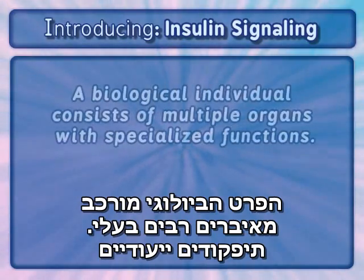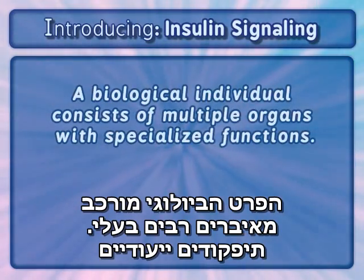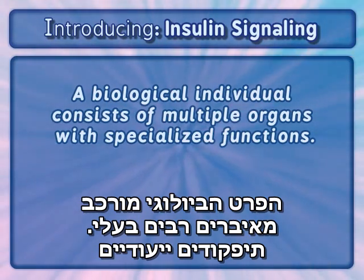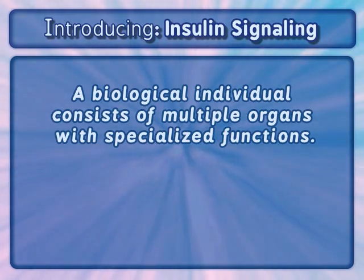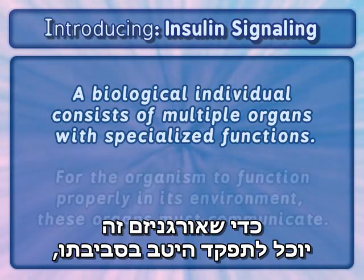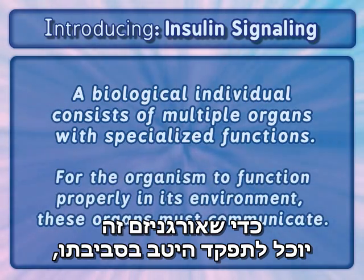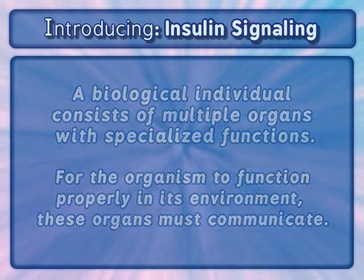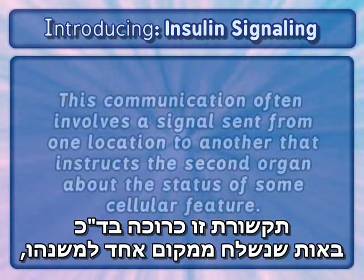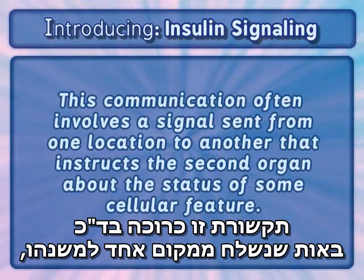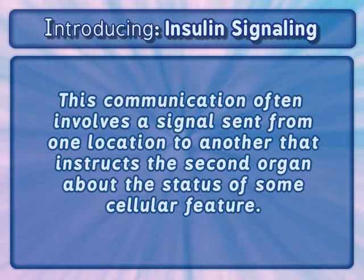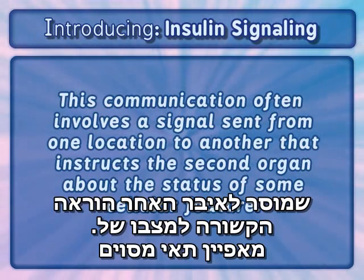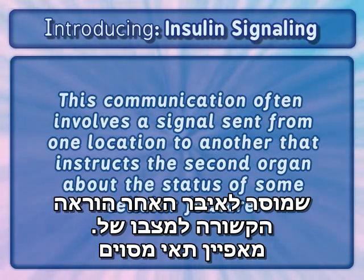A biological individual consists of multiple organs with specialized functions. For the organism to function properly in its environment, these organs must communicate. This communication often involves a signal sent from one location to another that instructs the second organ about the status of some cellular feature.